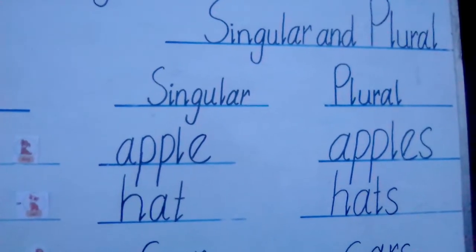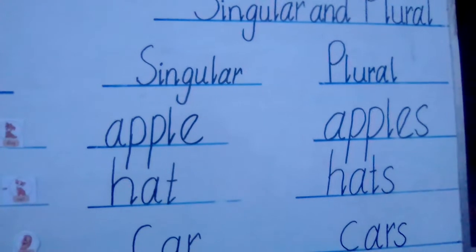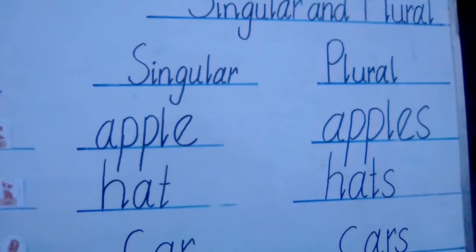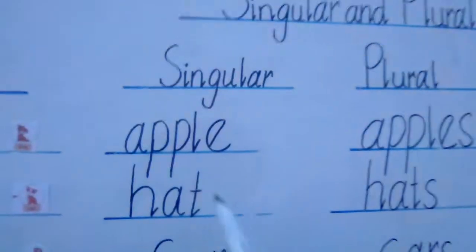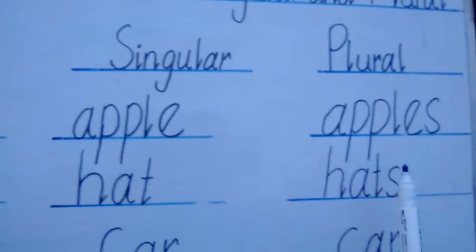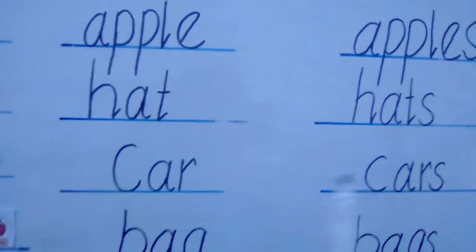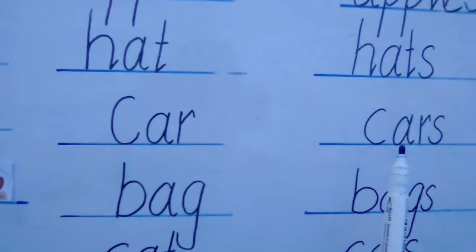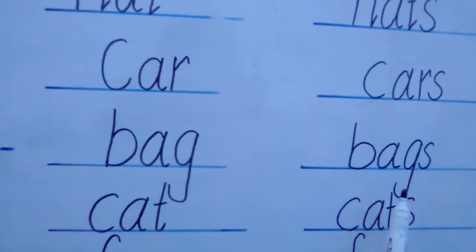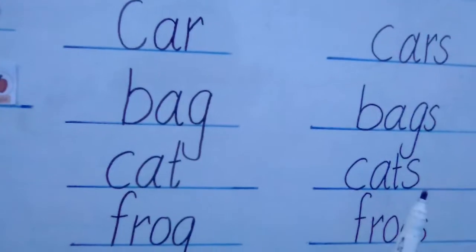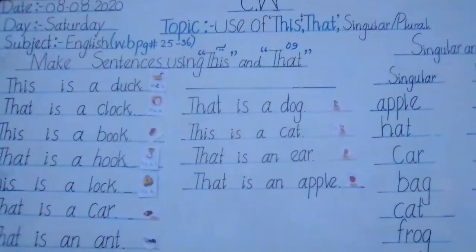Next topic is singular and plural. Singular means 'wahid', plural means 'jama'. Singular is one thing and plural is more than one thing. Apple — singular; apples — plural. Hat — singular; hats — plural. Car — singular; cars — plural. Bag — singular; bags — plural. Cat — cats. Frog — frogs.